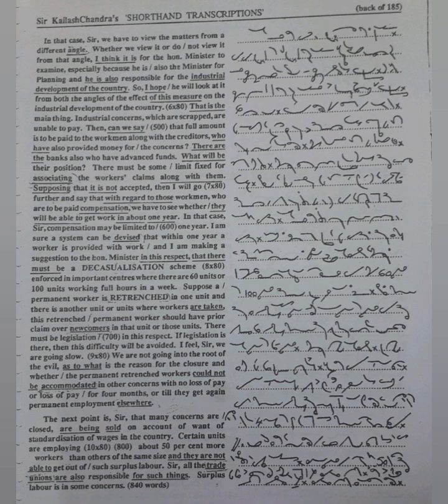Where there are 60 units or 100 units working full hours in a week, suppose a permanent worker is retrenched in one unit and there is another unit or units where workers are taken, this retrenched permanent worker should have prior claim over newcomers in that unit or those units. There must be legislation in this respect. If legislation is there, then this difficulty will be avoided.